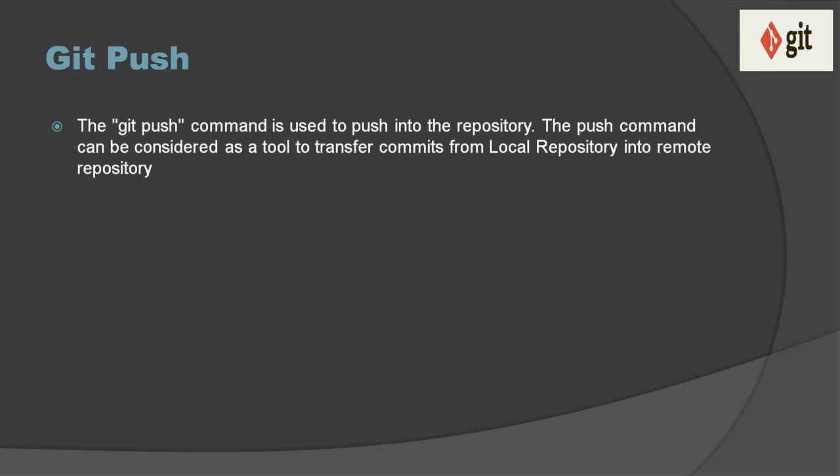First, you need to add all your changes into the staging area, and for that we have the git add command. After that you need to issue git commit, which commits your changes into the local repository. Afterwards, if you want to publish your changes on the remote repository, we have a command called git push.